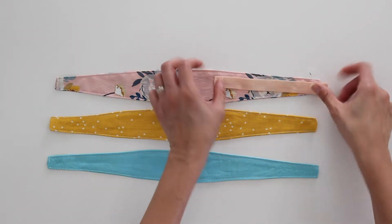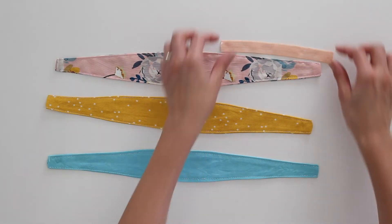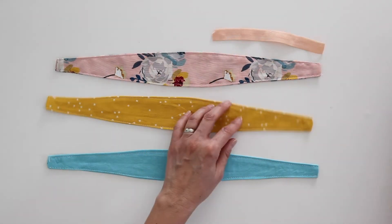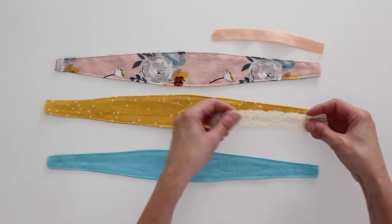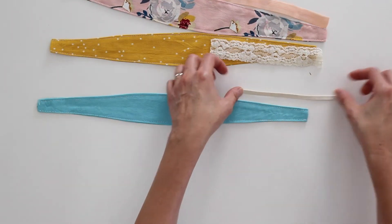For this one, I'm just going to be installing some fold over elastic there. I like this because it's pretty soft and stretchy. For this one, I'm going to use lace. And for this one, I'm actually going to use plain elastic and I'm going to cover it.